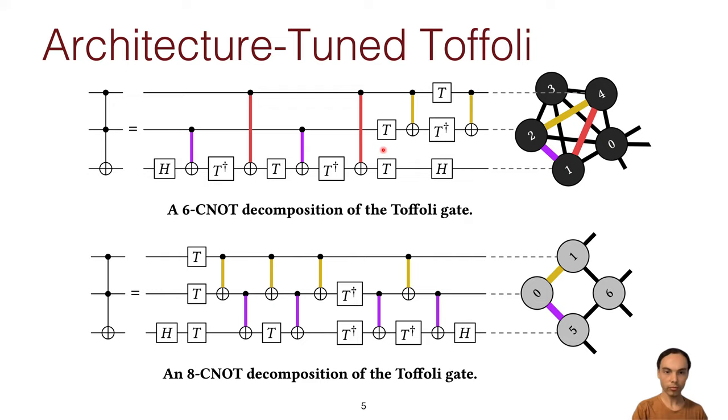So instead, there's actually multiple decompositions of this Toffoli gate. This is the lesser known eight CNOT Toffoli gate, which only needs two of the connections and saves on those swap gates for a total of eight instead of 12.